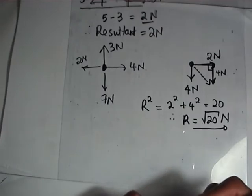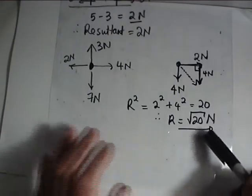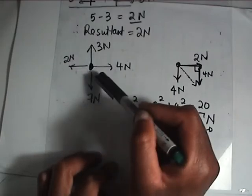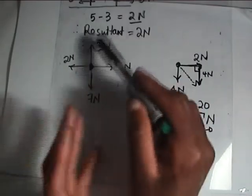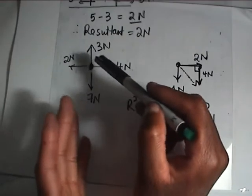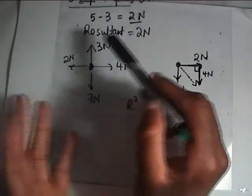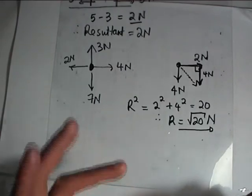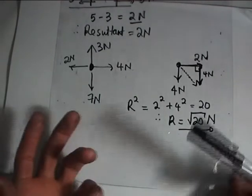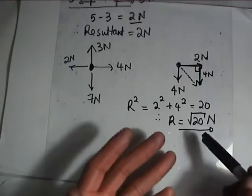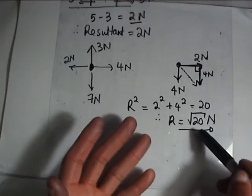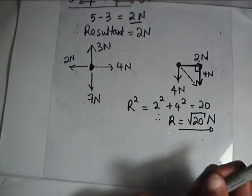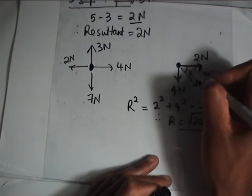This resultant force is the effect of all these forces — whatever they are, wherever they are facing, their result of their action is just a resultant of root 20 newtons. But what you would also need is: where is this object going to move? I know it's being pulled by a resultant force of root 20 newtons, but where is it moving?